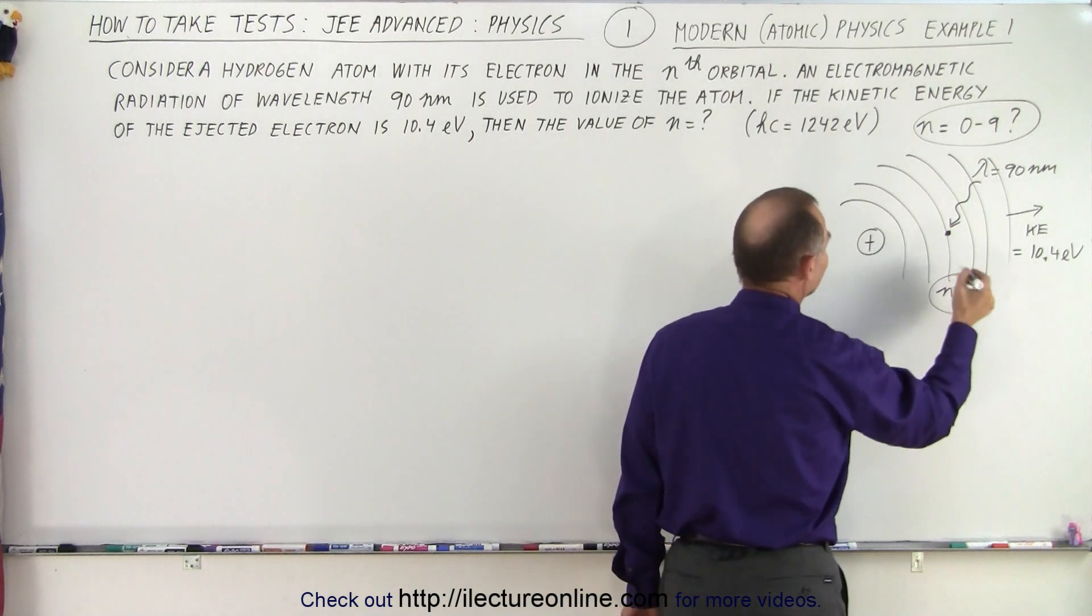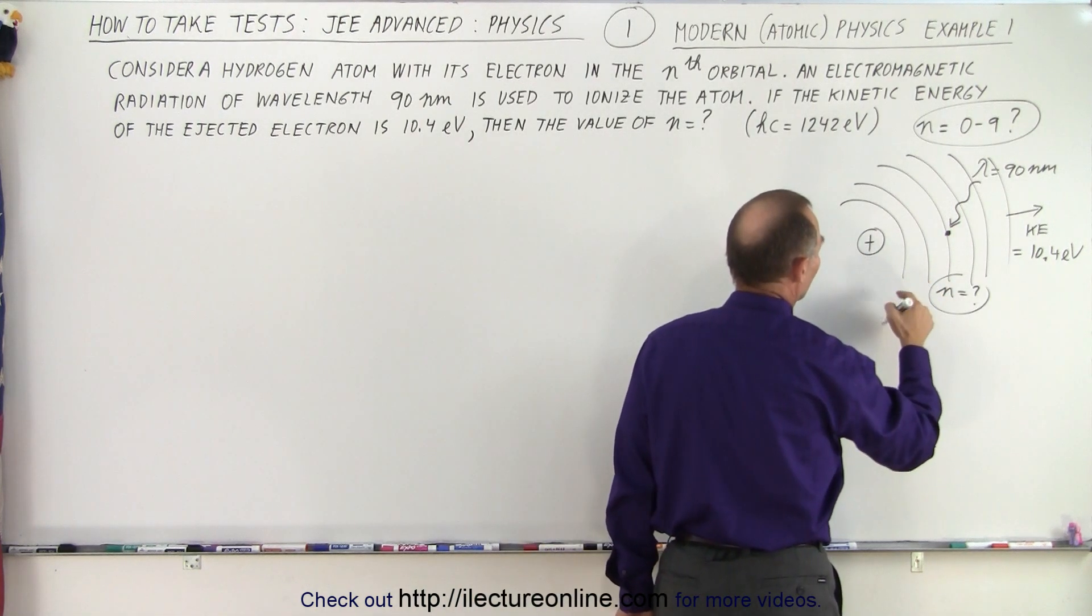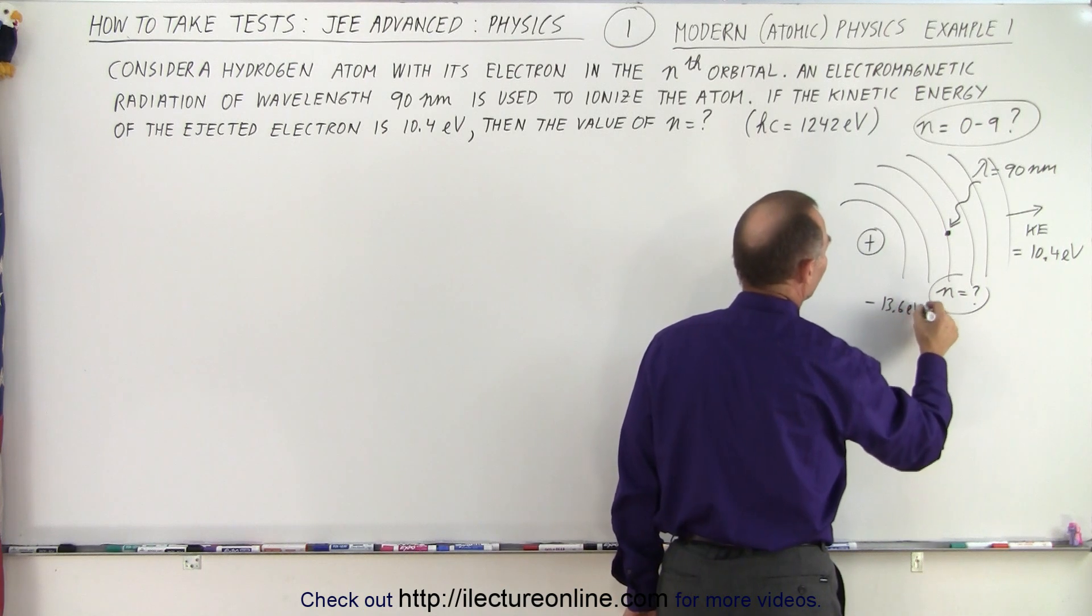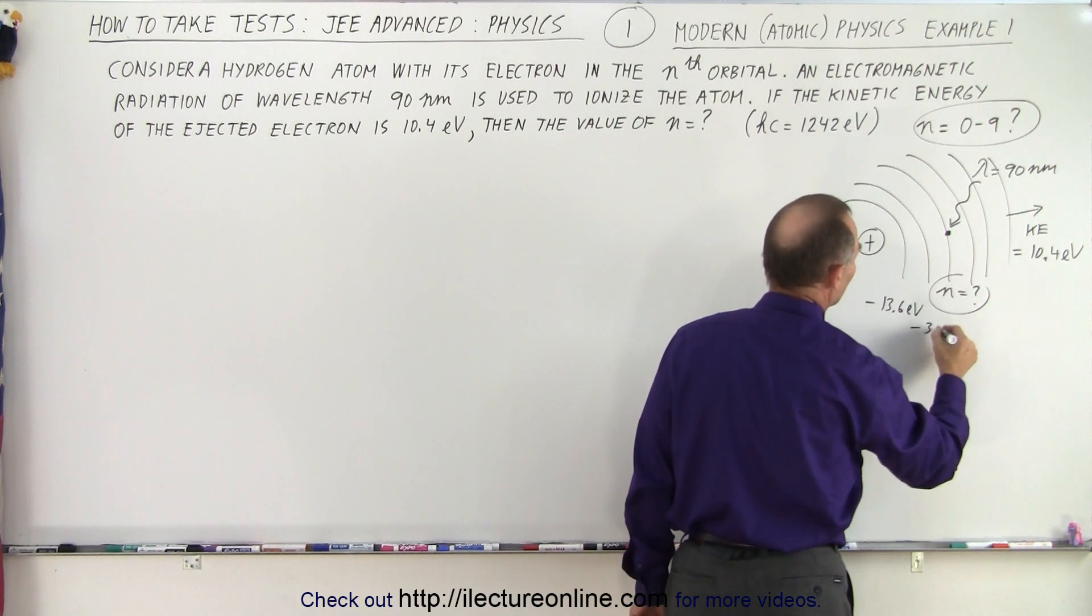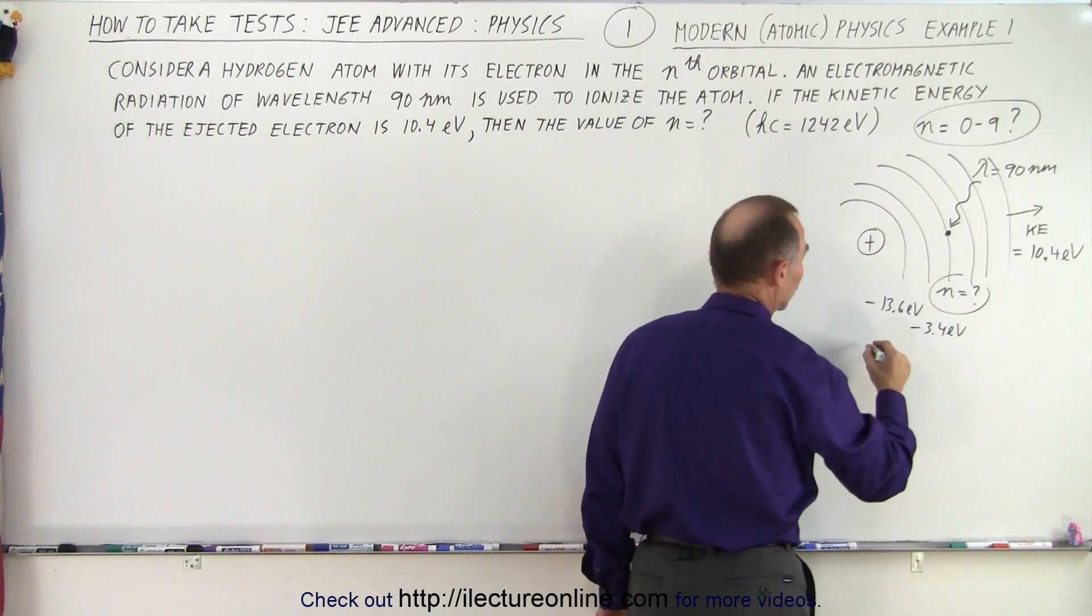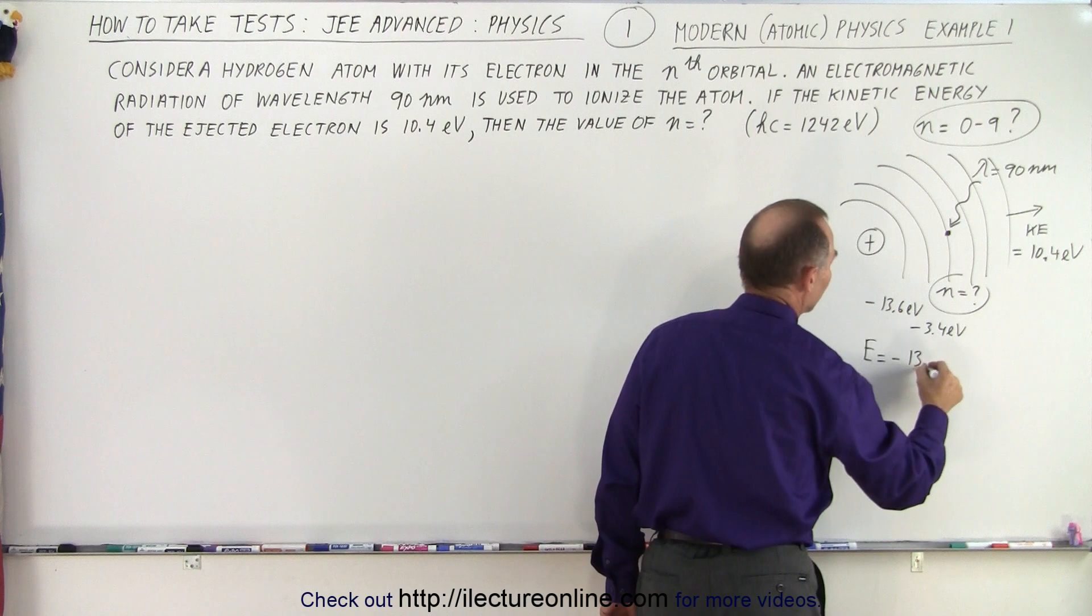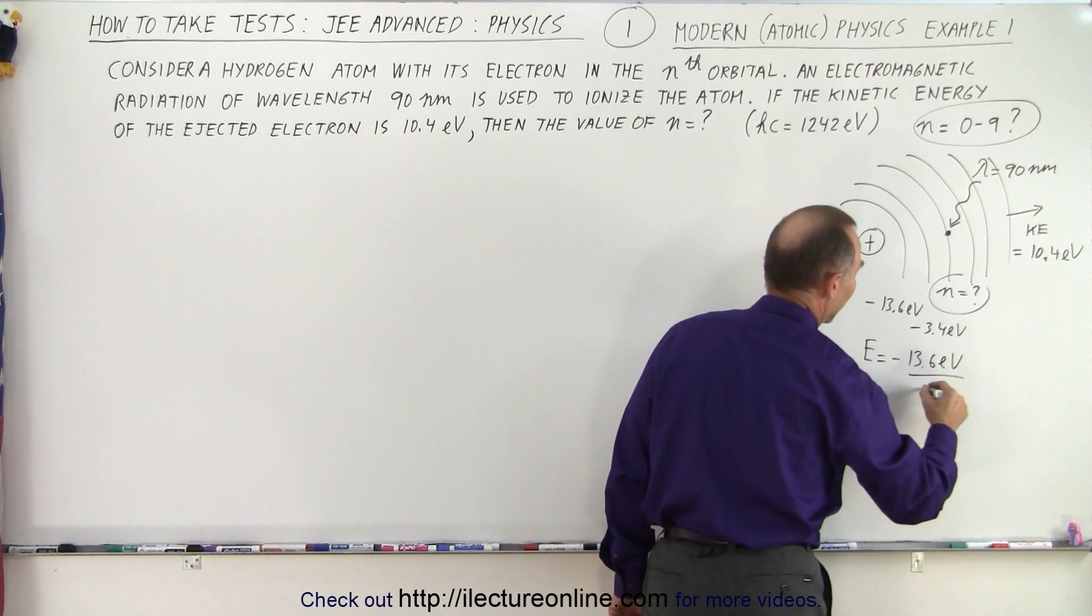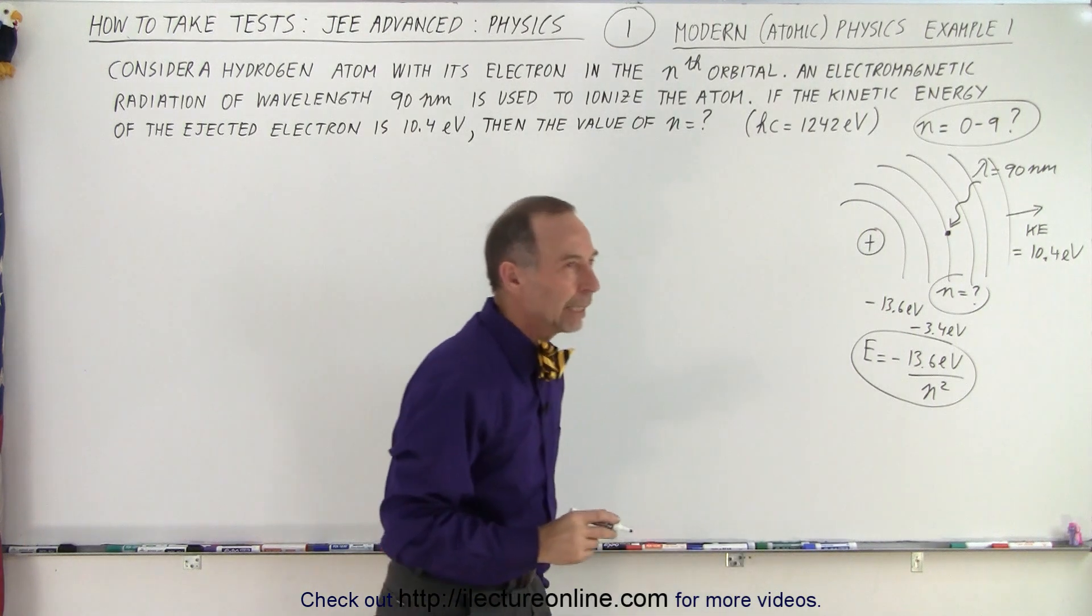So, we know that the innermost orbit has an energy level of minus 13.6 electron volts. The next one is minus 3.4 electron volts, and so forth. So we're able to calculate that. We know that the energy level is equal to minus 13.6 electron volts divided by the orbital squared. So we should know that.